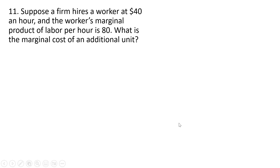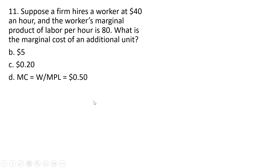Question 11. Suppose a firm hires a worker at $40 an hour and the worker's marginal product of labor per hour is 80. What is the marginal cost of an additional unit? If we take the wage and divide it by the marginal product of labor, we get marginal cost. So 40 divided by 80 gives us a marginal cost of 50 cents. Answer choice D.